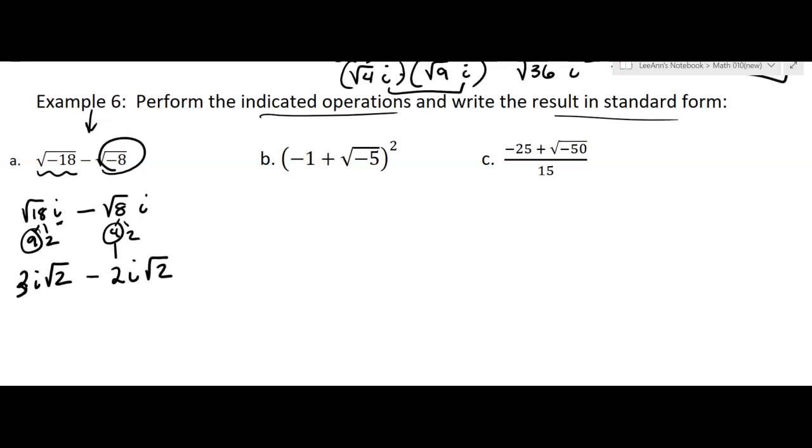Okay, so the square root of 4 was that 2, and the 2 that was left over was that 2, and then the i is in the middle. Now, this is a subtraction problem, right? So can I subtract them? Because I have 3i square root 2 minus 2i square root 2. Yes, this part is the same. The only thing that's different is the coefficients. So I can subtract them.